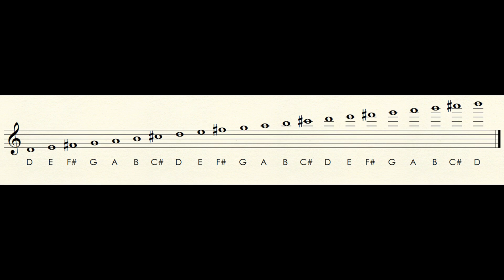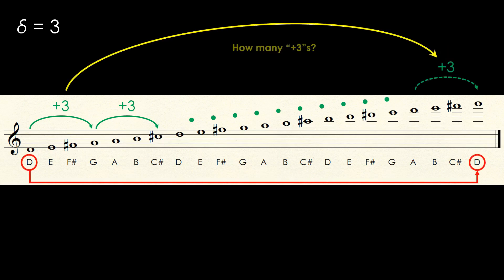Pick any whole number greater than zero and less than seven. Add that to the note you picked to find out where you end up along the extended major scale. Add the same number again on the new note to see where you'll end up along the scale. Keep on doing this until you end up with the note you started with. How many times did it take?